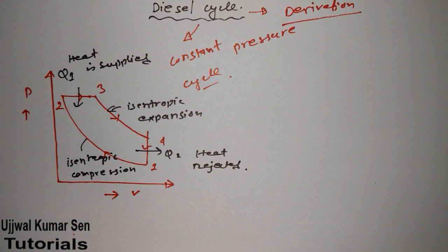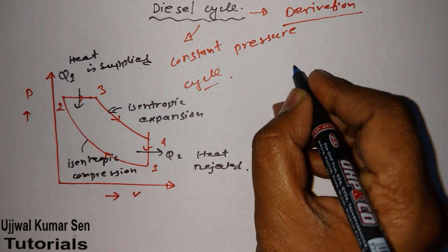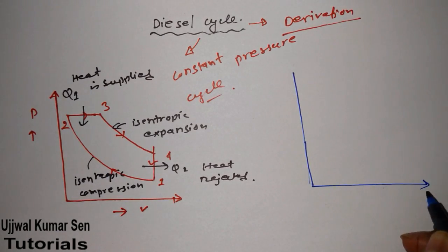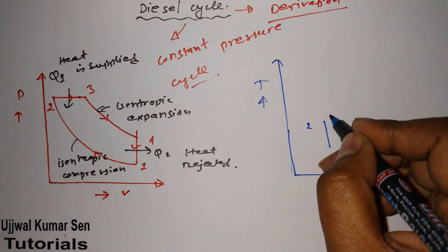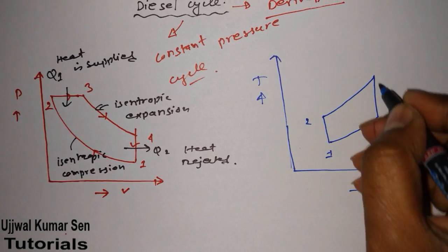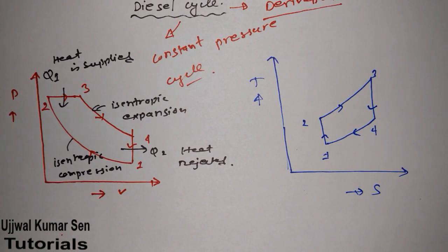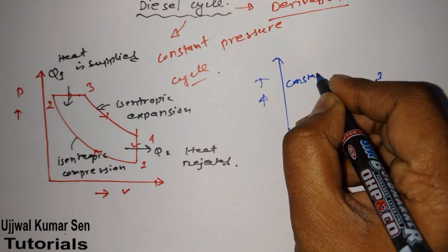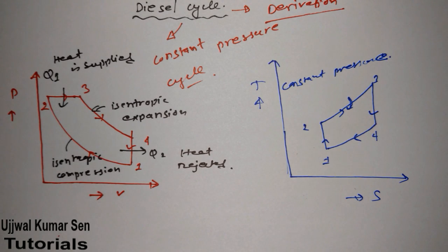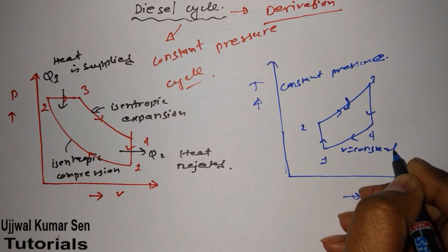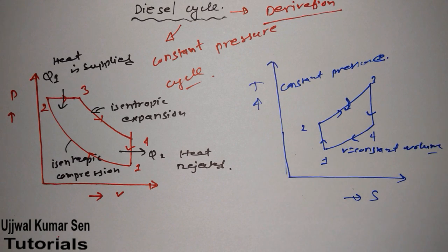Now we'll understand the TS diagram, where T is temperature and S is entropy. The points are 1, 2, 3, and 4. Process 2 to 3 is the constant pressure process where heat is added. Process 3 to 4 is constant volume where heat is rejected. Processes 1 to 2 and 3 to 4 are isentropic compression and expansion respectively.